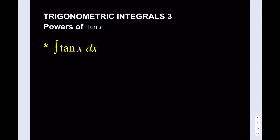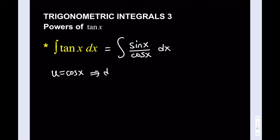Let's get started with tangent x to the first power. There are a few ways to do this, but what I'm going to do is write this as sine x over cosine x, and then use u-substitution. So u equals cosine x, and from here I get du as negative sine x dx.